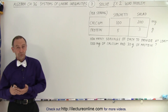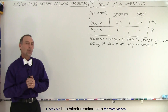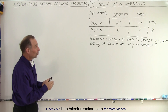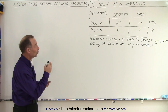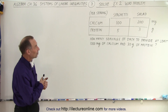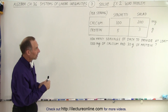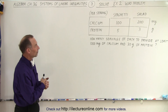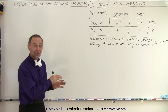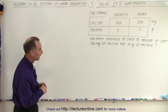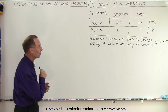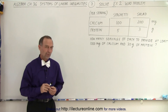Let's use the technique we've learned to solve systems of linear inequalities on a word problem. We have two dishes, spaghetti and salad. For each serving of spaghetti there's 100 milligrams of calcium and 5 grams of protein. For each serving of salad there's 200 milligrams of calcium and 3 grams of protein, probably from some ham and cheese. The question asks how many servings of each to provide at least 1000 milligrams of calcium and 30 grams of protein.